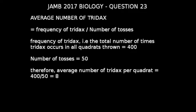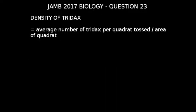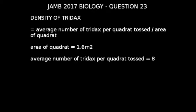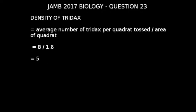Next, let's look at how to calculate the density of tridas. The formula is: density = average number of tridas per quadrant divided by area of quadrant. The area of the quadrant is 1.6 meters square, and the average number of tridas per quadrant we just calculated is 8. Therefore, density of tridas = 8 / 1.6 = 5.